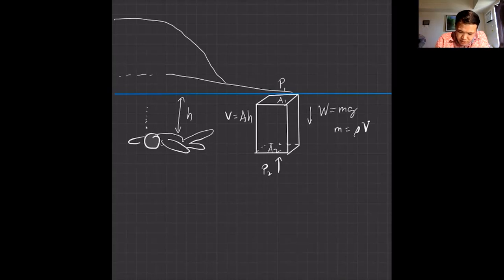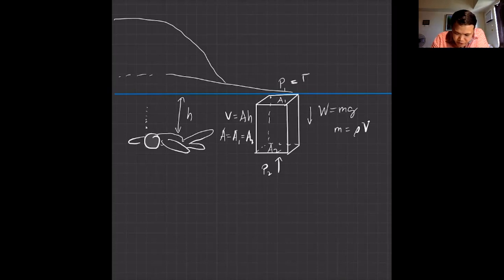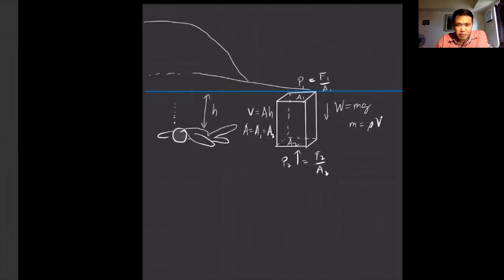Wait — let's be careful: area A₁ equals area A₂ since it's a rectangular container, so we can cancel them. The weight term is ρVg, and since V = A·h, this becomes ρAhg. After canceling A throughout, we arrive at: P2 − P1 − ρhg = 0, which gives P2 = P1 + ρhg.